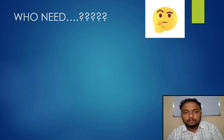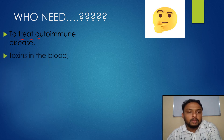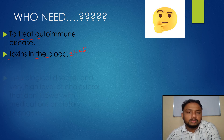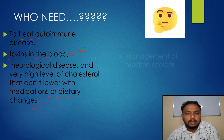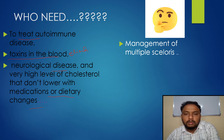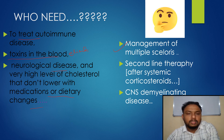Who needs plasmapheresis? It is needed to treat autoimmune diseases, to eliminate toxins in the blood, in cases of neurological diseases, very high levels of cholesterol that don't lower with medications or dietary changes, management of multiple sclerosis, as a second-line therapy after systemic corticosteroids, and in CNS demyelinating diseases.